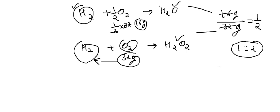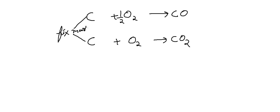So that demonstrates the Law of Multiple Proportion. Let's look at one more example. Here carbon reacts with oxygen to form carbon monoxide (CO), and carbon reacts with oxygen to form carbon dioxide (CO₂). Here carbon is taken as the fixed mass.